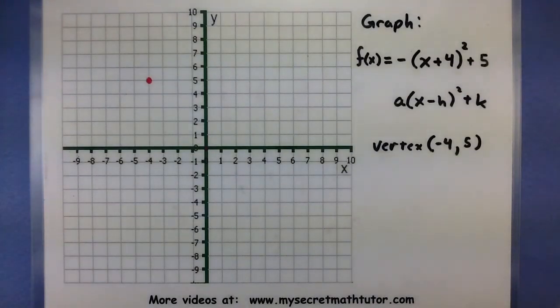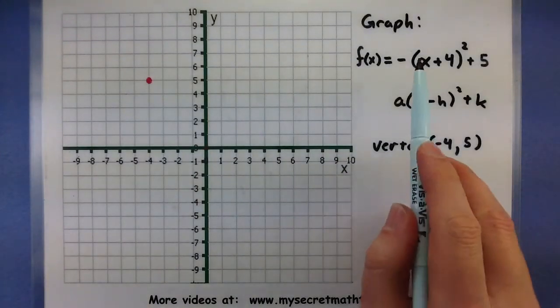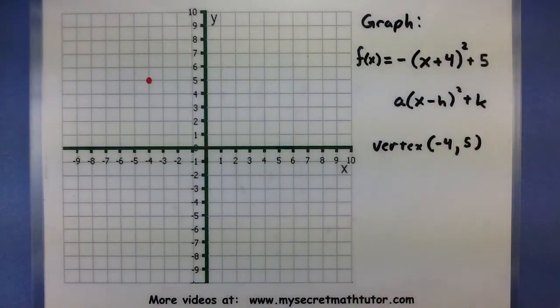You can tell a stretch when the absolute value of the number is larger than 1. You can tell a shrink when the absolute value is between 0 and 1. And right now, it looks like if I take the absolute value, I get exactly 1. So this hasn't been stretched or shrunk in any way.